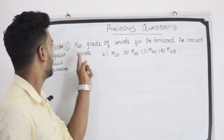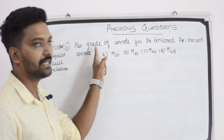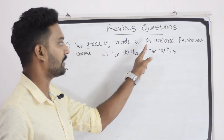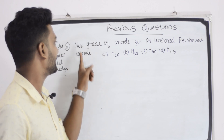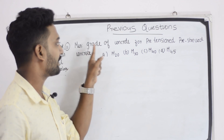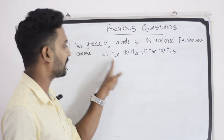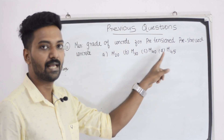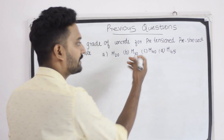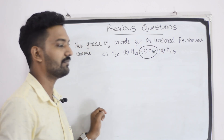Next question — assistant engineer, civil: what is the minimum grade of concrete for pre-tensioned pre-stressed concrete? Options M20, M30, M40 and M45. The answer is M40. We have been covering previous exam questions.